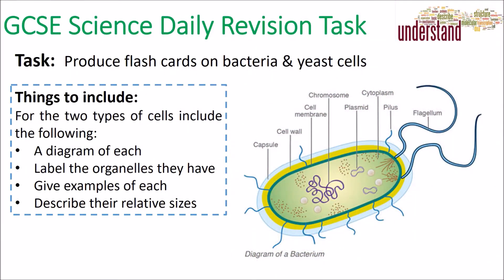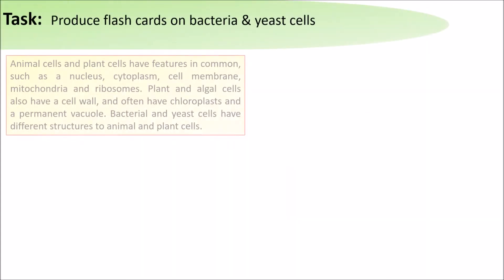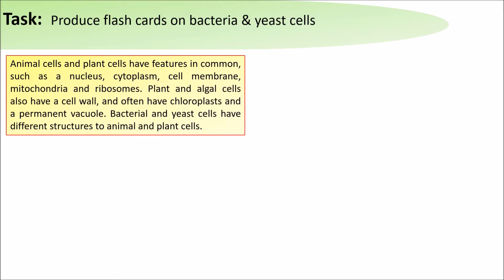Hello and welcome to today's daily science revision task on producing a flashcard on bacteria and yeast cells. Animal cells and plant cells have features in common, such as nucleus, cytoplasm, cell membrane, mitochondria, and ribosomes.